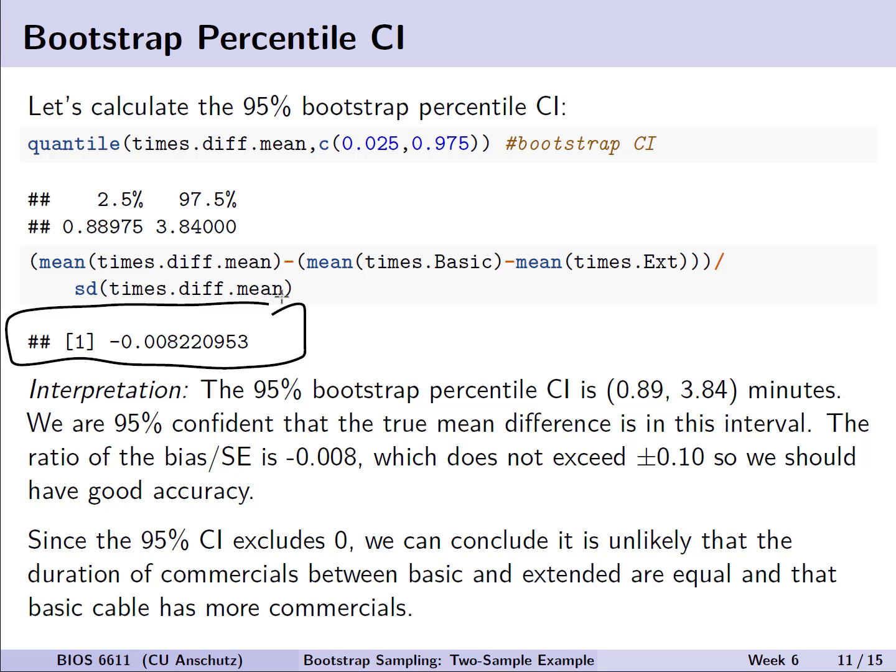However, we do note there is that connection between confidence intervals and statistical significance that we can take advantage of. So here, in our example, since the 95% confidence interval excludes 0, we can conclude it is unlikely that the duration of commercials between basic and extended cable are equal, and that basic cable likely has more commercials. Again, this isn't a p-value that we're interpreting as a single summary measure, but we can leverage the confidence interval to draw some conclusions.